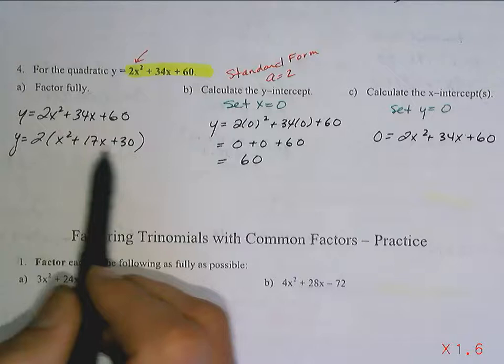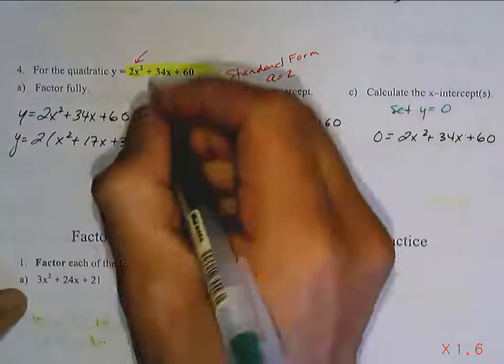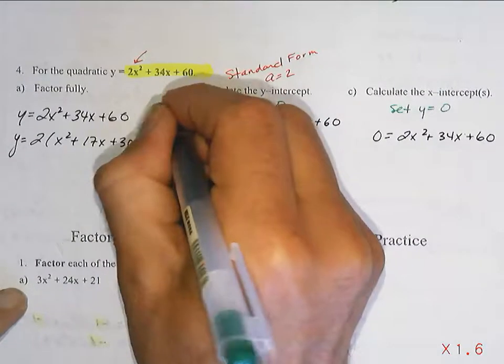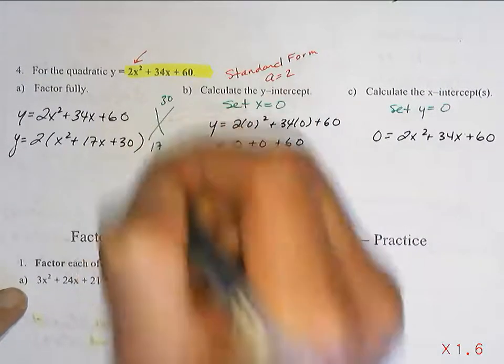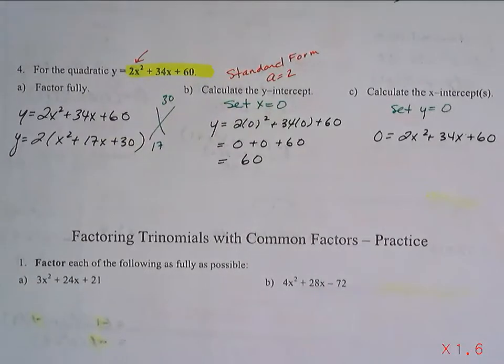So, now the question is, will that trinomial factor? Two numbers that multiply to give 30 and add to give 17. 15 and 2. And if I couldn't come up with them, I'd use a factor tree.